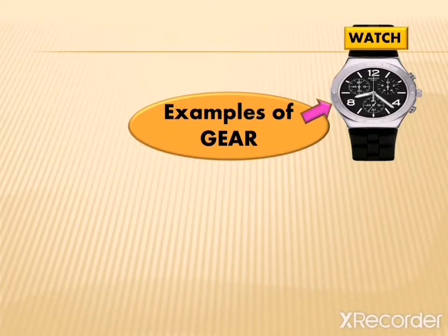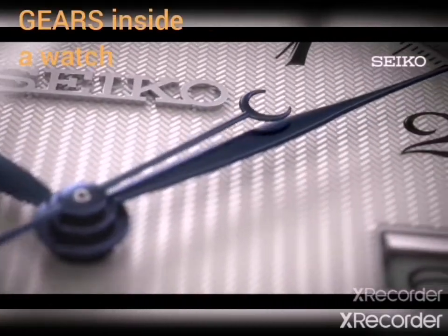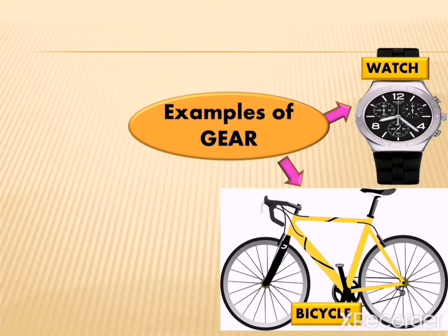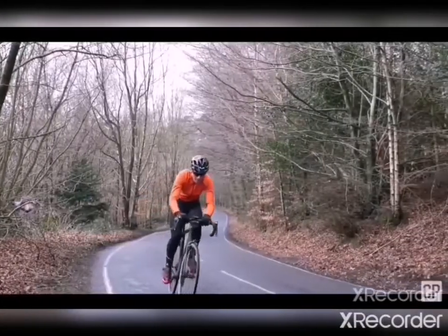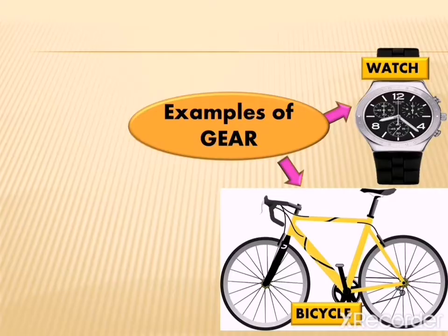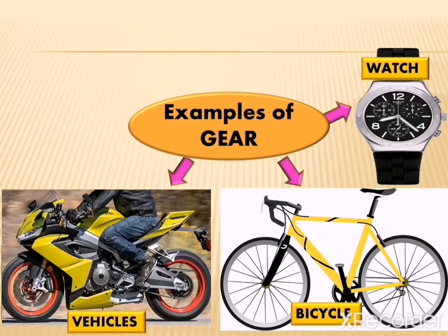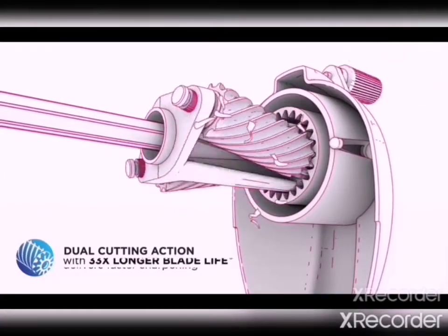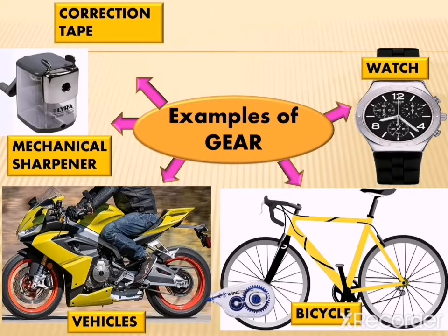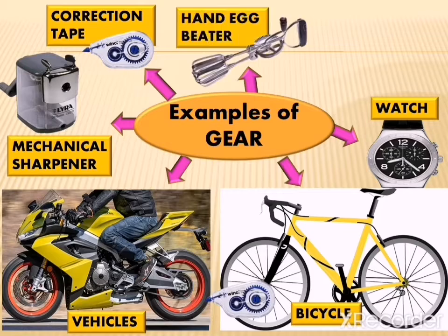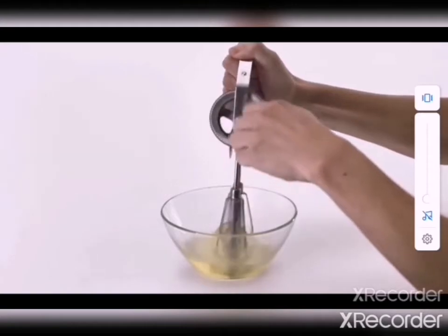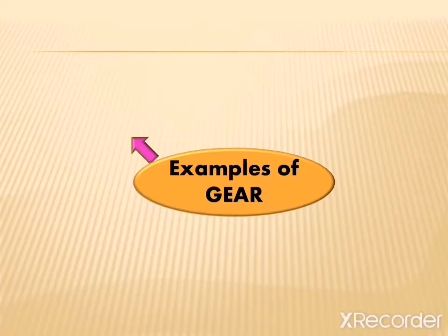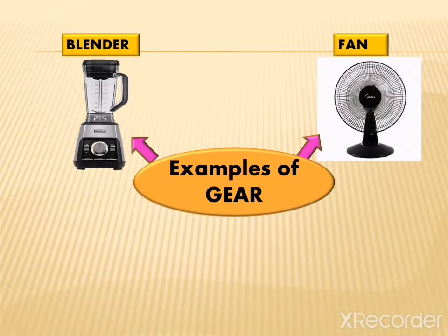The examples of tools that use gear include a watch, a bicycle, gears in vehicles, a mechanical sharpener, correction tape, a hand egg beater, a hand drill, a blender, and a fan.